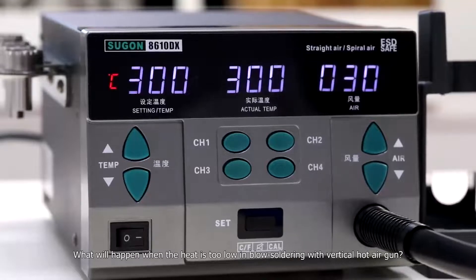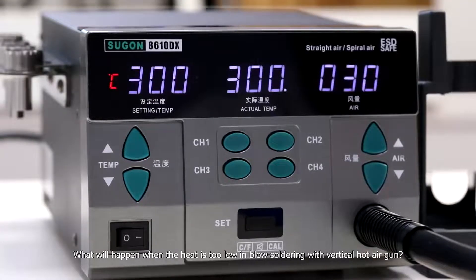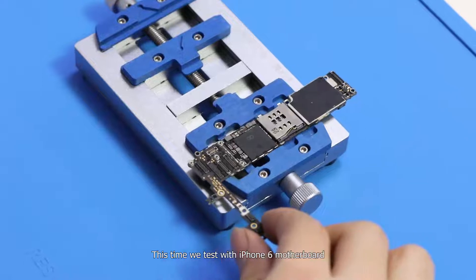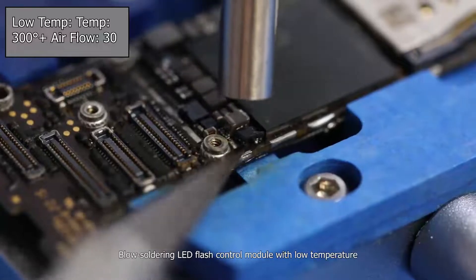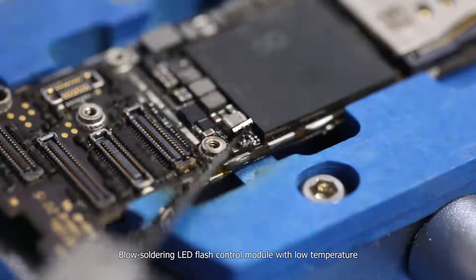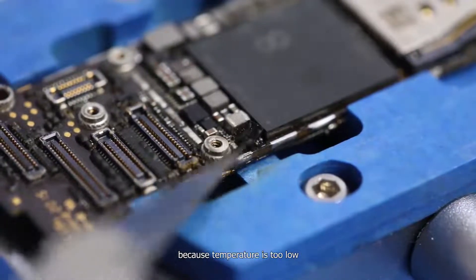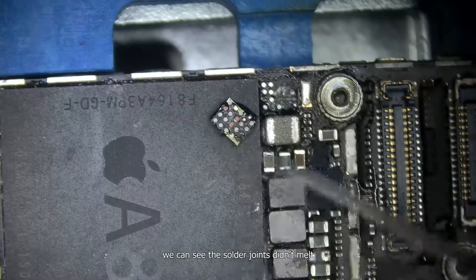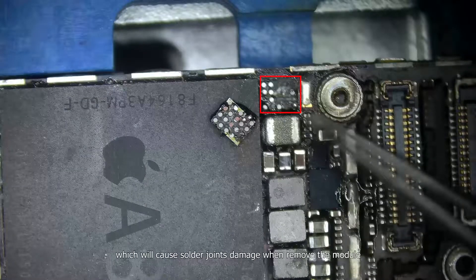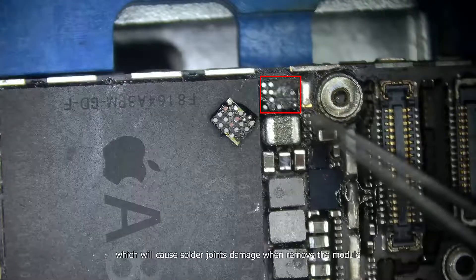What will happen when the heat is too low in blow soldering with vertical hot air gun? This time we test with the iPhone 6 motherboard. Blow soldering LED flash control module with low temperature. Because the temperature is too low, we can see the solder joints don't melt, which will cause solder joints damage when removing the module.